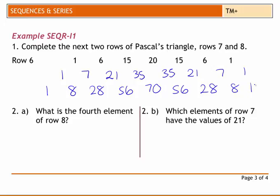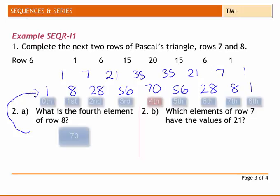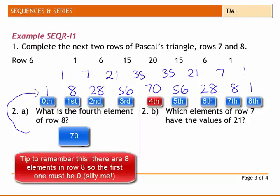What is the 4th element of row 8? Well, we can look here. That's row 8. The 4th element is 1, 2, 3, 4. So it's 56.